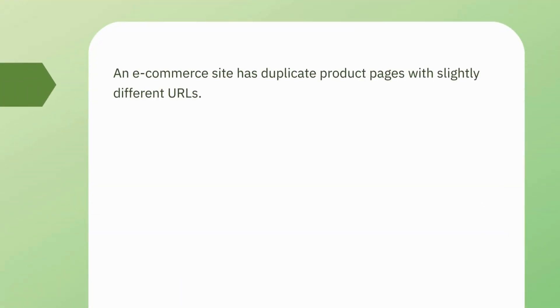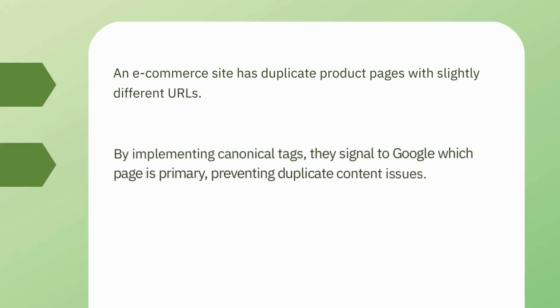An e-commerce site has duplicate product pages with slightly different URLs. By implementing canonical tags, they signal to Google which page is primary, preventing duplicate content issues.